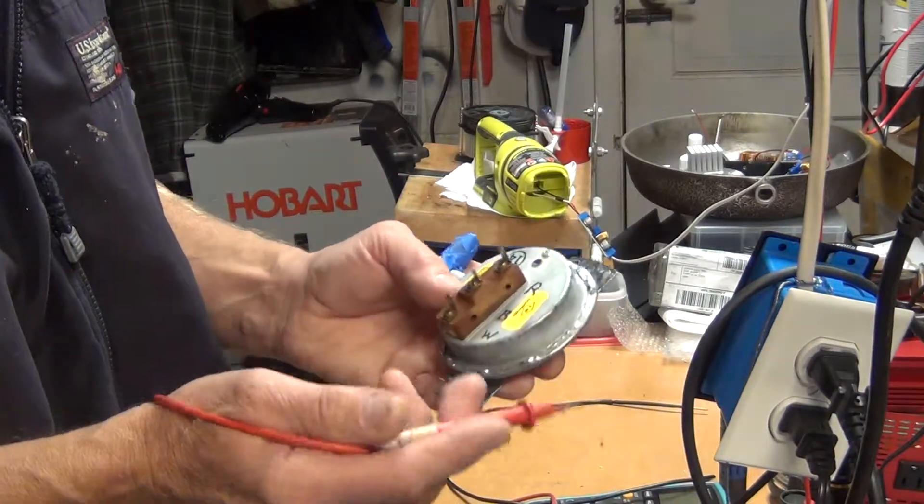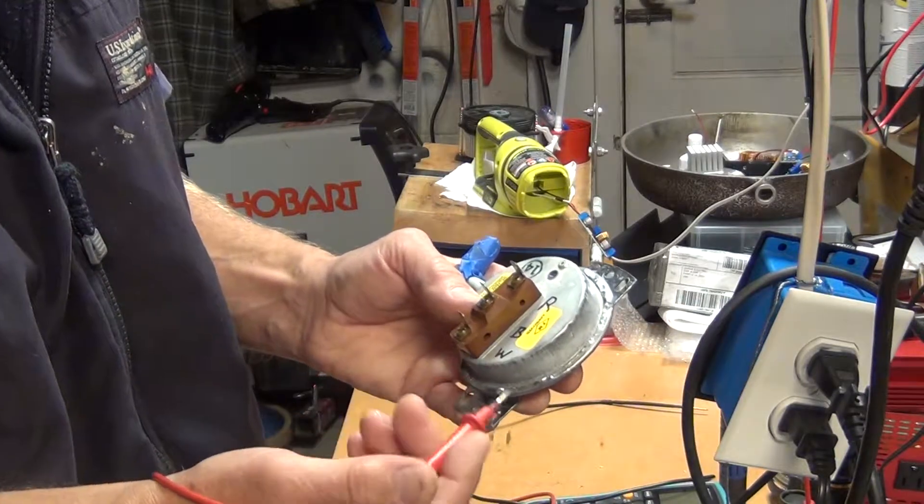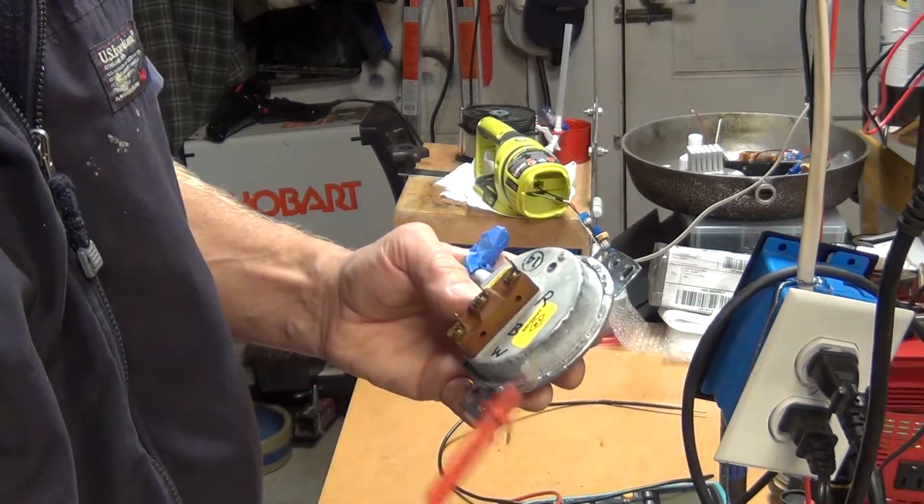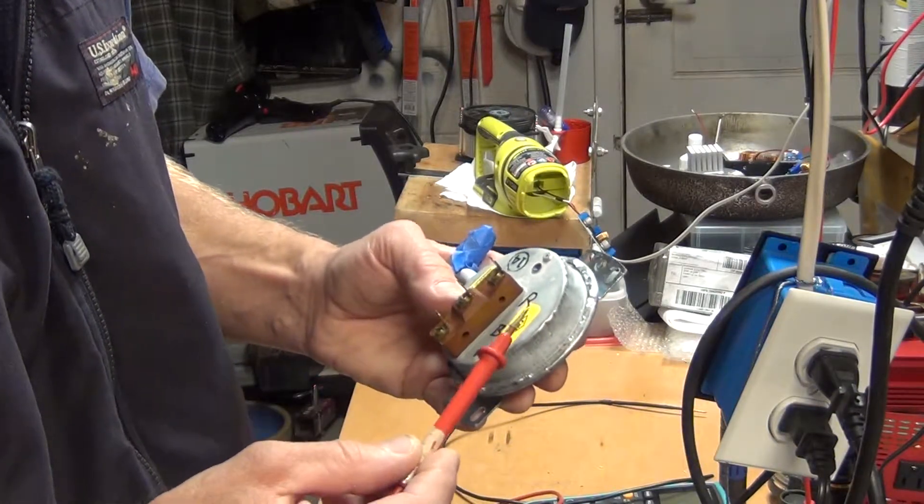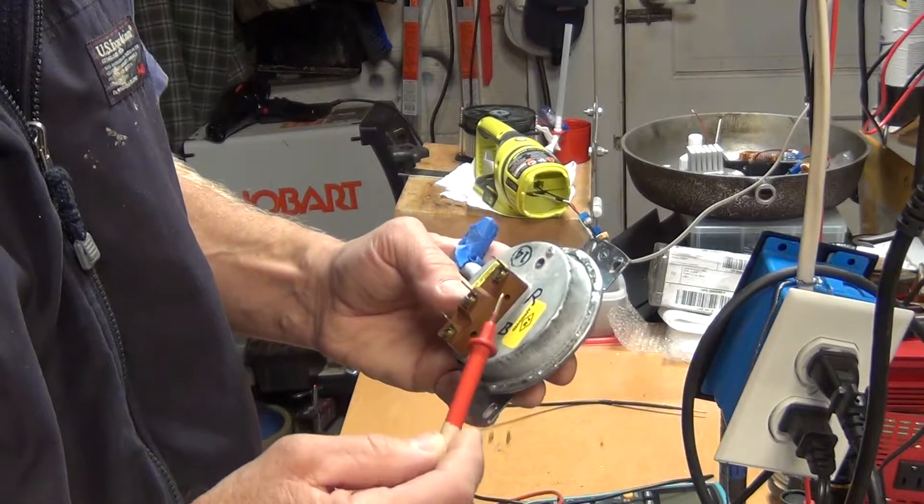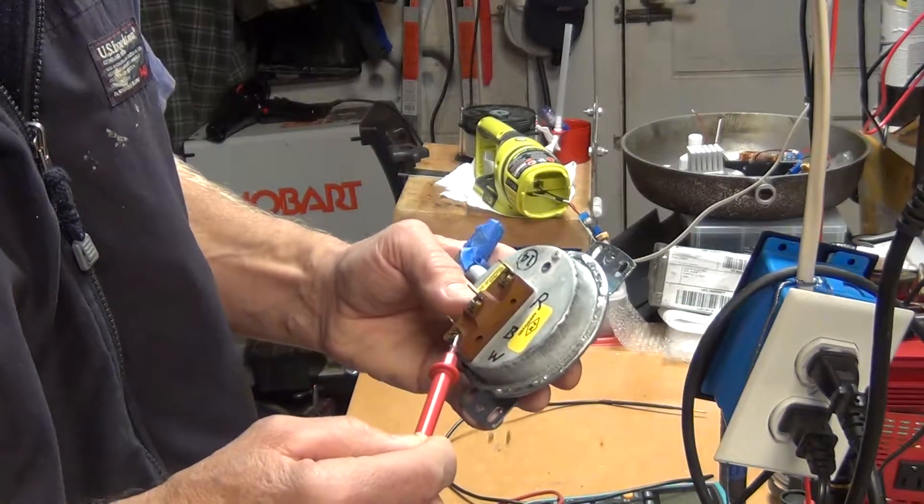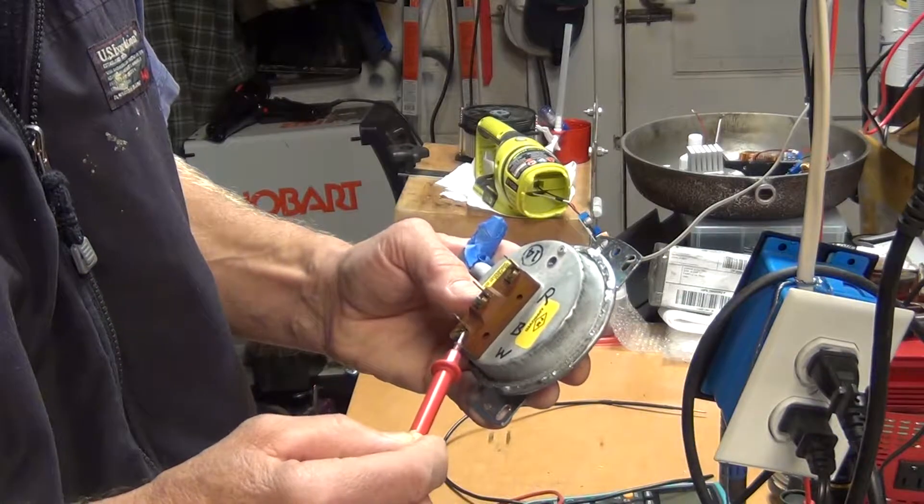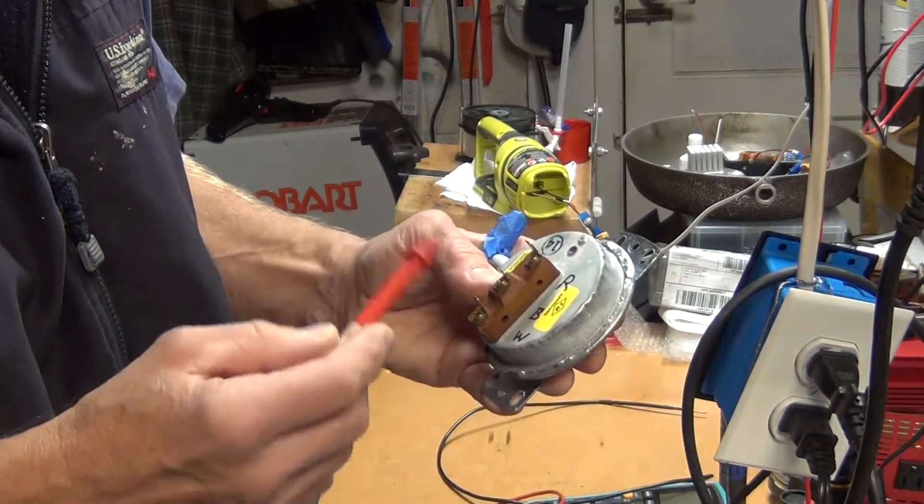So again, normally in a normal stage when the furnace is not running, continuity is between red and white. And that is actually feeding the inducer fan when you engage the thermostat.